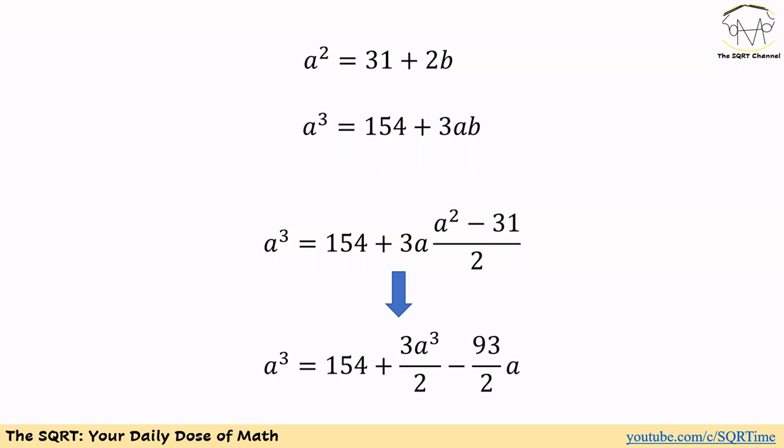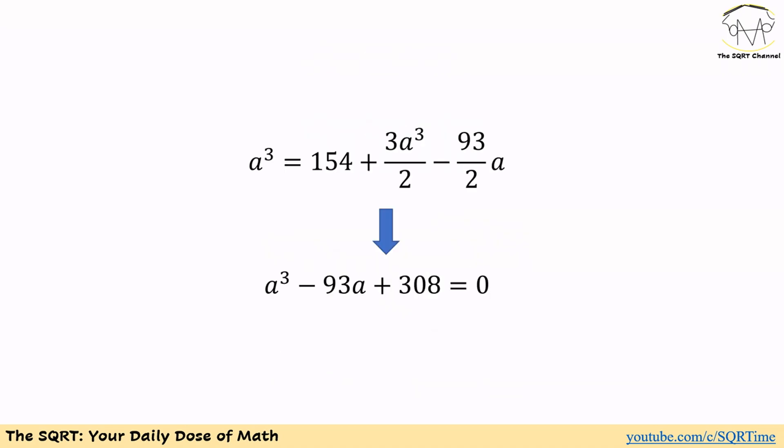So we will have a cubed equals 154 plus 3 times a times a squared minus 31 over 2. And if we simplify it, we are going to end up with a cubed equals 154 plus 3 times a cubed over 2 minus 93 over 2 times a. If we simplify it a little bit further, we will have a cubed minus 93a plus 308 equals zero.